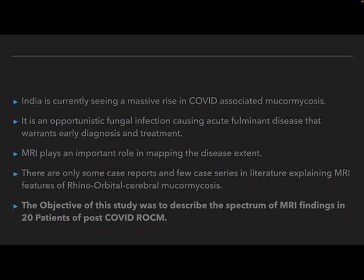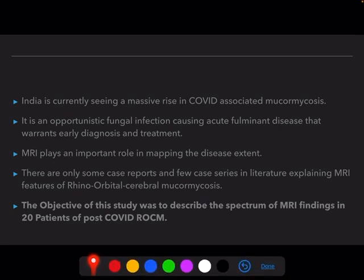India is currently seeing a massive rise in cases of COVID-associated mucormycosis, with sinonasal disease being the most common. Mucor is an opportunistic fungal infection that causes acute fungal disease, warranting early diagnosis and treatment. MRI plays an important role in mapping the disease extent, yet only a few case reports and case series in the literature explain the MRI features of ROCM.